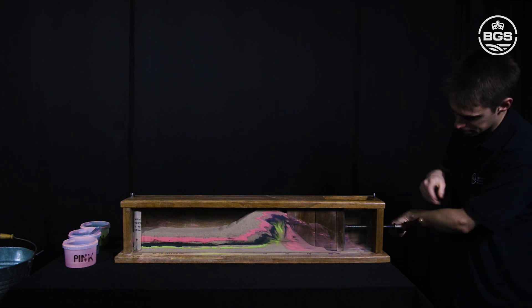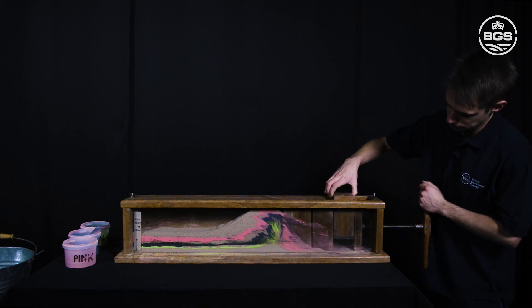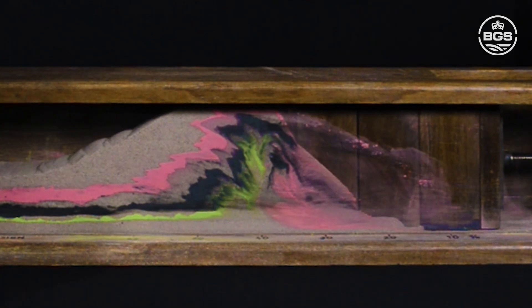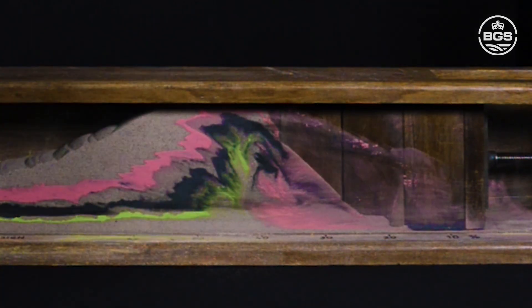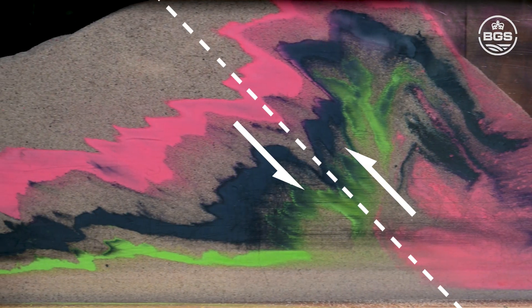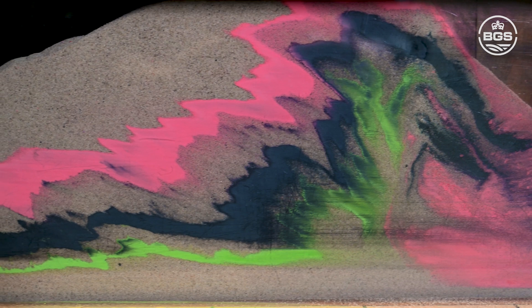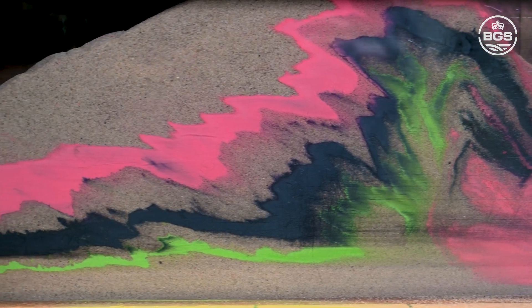Now look closely at the mountains forming in the sand. In some places, the layers bend and fold, whereas in other places, the layers fault and break. This shows how different rock types shape the structure of a mountain range.